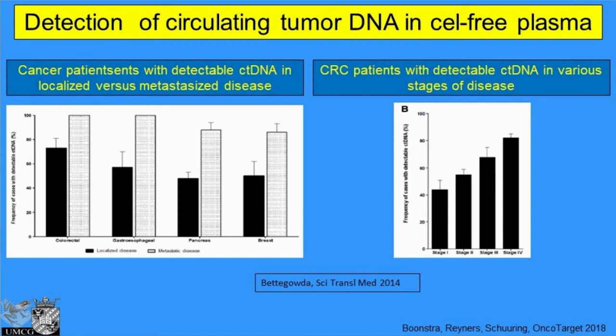You should also realize that the detection of ctDNA varies by disease state. Looking at four malignancies, the black bar indicates patients with localized disease and the open bars indicate patients with metastasized disease. If you have metastasized disease, in most cases we can identify ctDNA. But if you don't have metastasized disease, less than 50% overall of patients have detectable ctDNA. Similarly, if you have a lower stage of disease — stage one — in most malignancies we see less than 40% of patients where we can detect ctDNA using currently available technology.